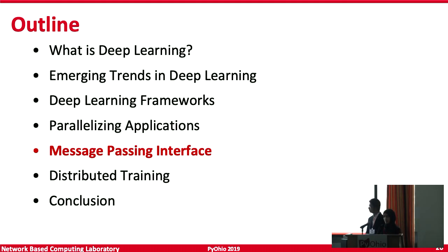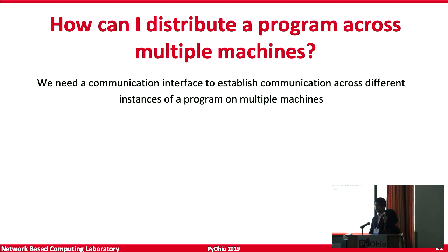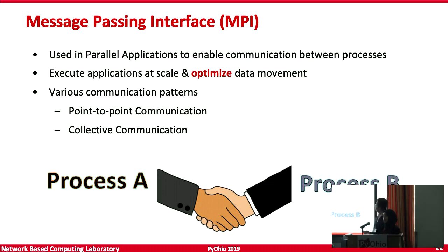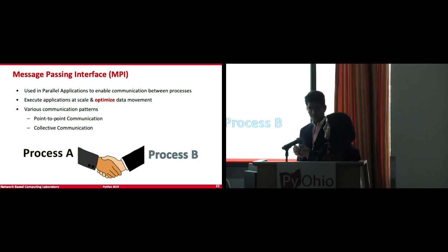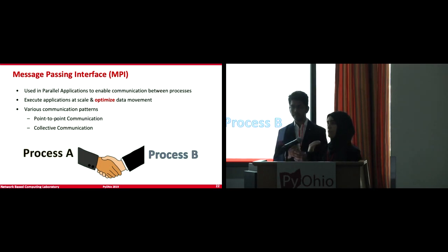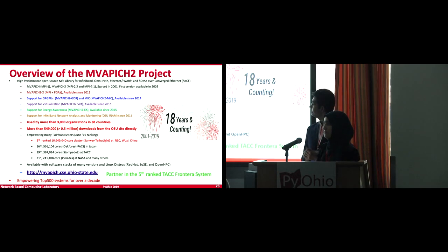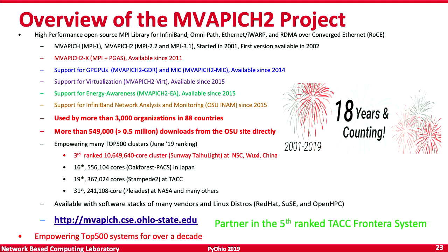This is where the message passing interface falls into place. If you want to distribute a program across multiple machines, you need to communicate between different processes, and that's where MPI solves the problem. The message passing interface is used in parallel applications so that processes can communicate information with each other, allowing you to execute applications at a much larger scale and optimize data movement. In our lab, we developed an MPI library called MvaPich2, optimized for both CPU and GPU communication, empowering top 500 supercomputing systems for over a decade.